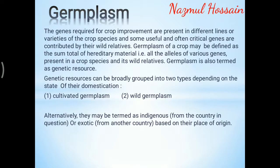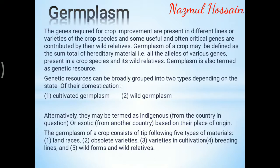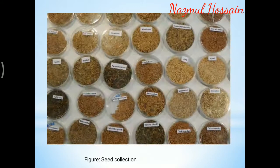Alternatively, they may be termed as indigenous or exotic based on their place of origin. The germplasm of a crop consists of the following five types of materials: land races, obsolete varieties, varieties in cultivation, breeding lines, and wild forms and wild relatives.